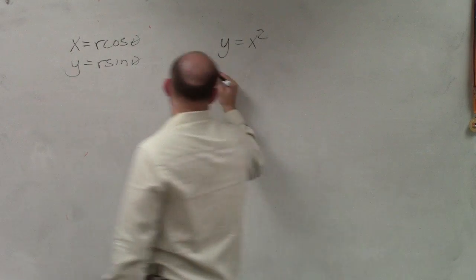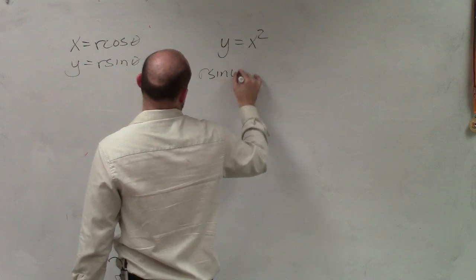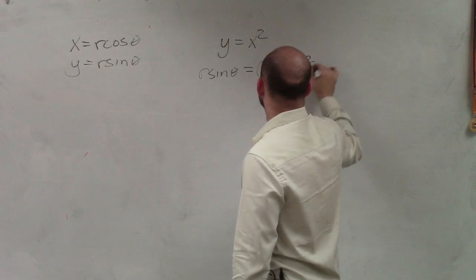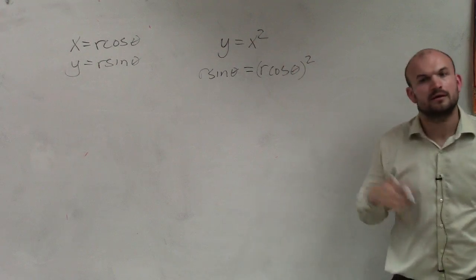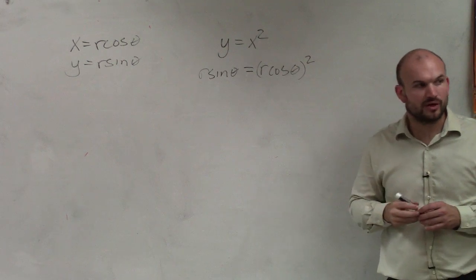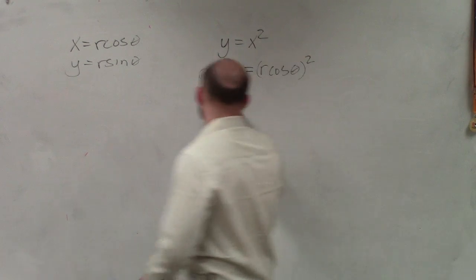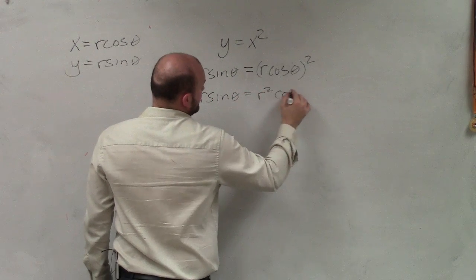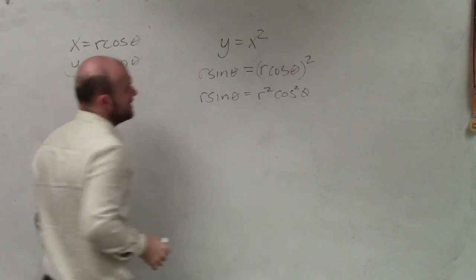So y is r sine of theta equals r cosine of theta squared. Now we have to apply a little bit of algebra. So we square this. So I get r sine of theta equals r squared cosine squared of theta.